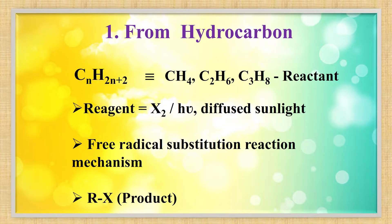Look at the slide. We can prepare from hydrocarbon or alkane by this method. The hydrocarbon or alkane has formula CnH2n+2, and if you remove one hydrogen and put one halogen, you get haloalkane.